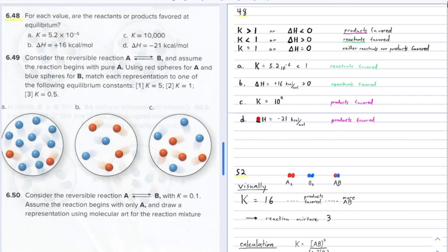For (c) and (d), the products are going to be favored. For (c), the equilibrium constant is 10,000 (10 to the fourth) — that's large, and most of the reactants would convert into products. For (d), the reaction is exothermic with an enthalpy change of negative 21 kilocalories per mole, so again the products would be favored.